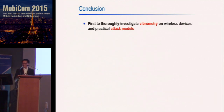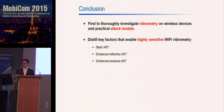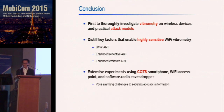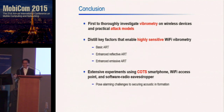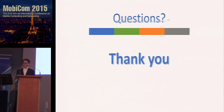To conclude, we are the first to thoroughly investigate vibrometry on wireless devices. We proposed two attack models and with our analytical model distilled the key features enabling highly sensitive Wi-Fi-based acoustic eavesdropping. We designed three mechanisms: basic ART, enhanced reflective ART, and emissive ART, and implemented them using commercial smartphones, wireless access points, and software-defined radios. Our experimental results impose an alarming security threat to acoustic systems. If you are interested in how the recovered audio sounds, please watch our one-minute video on YouTube. Thank you.